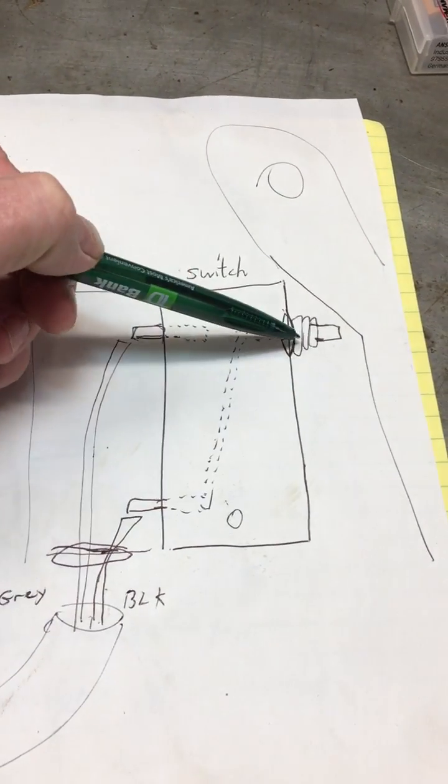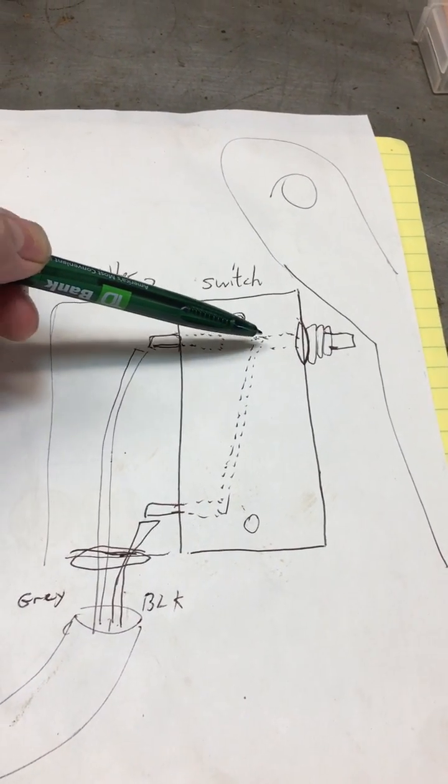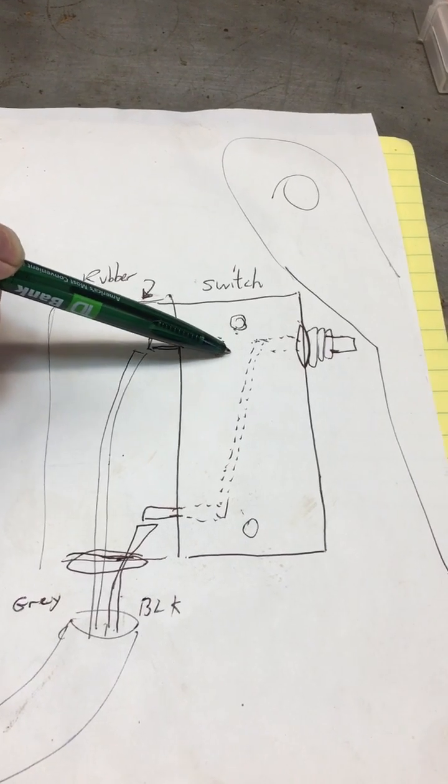This is the clutch lever, and when the lever goes in and out, it pushes on this plunger, and inside the plastic switch, it makes contact from here to here on a spring.